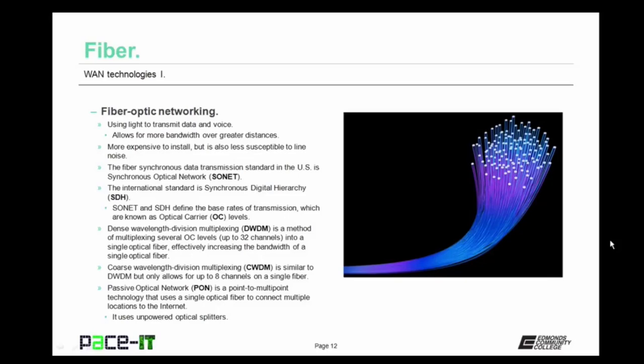Instead of DWDM, you could use CWDM — coarse wavelength division multiplexing. It's similar to DWDM, but only allows for up to eight channels on a single fiber. When fiber optic is delivered to the premise, it's usually delivered over a passive optical network, or PON — a point-to-multipoint technology that uses a single optical fiber to connect multiple locations to the internet. The passive optical network uses unpowered optical splitters.